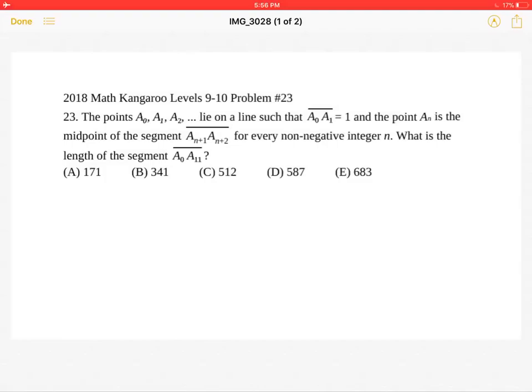The points a0, a1, a2, and so on lie on a line such that segment a0a1 is equal to 1, and the point an is the midpoint of the segment an+1, an+2, for every non-negative integer n.